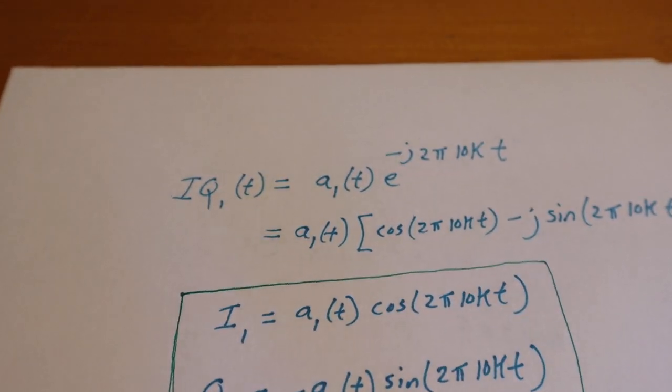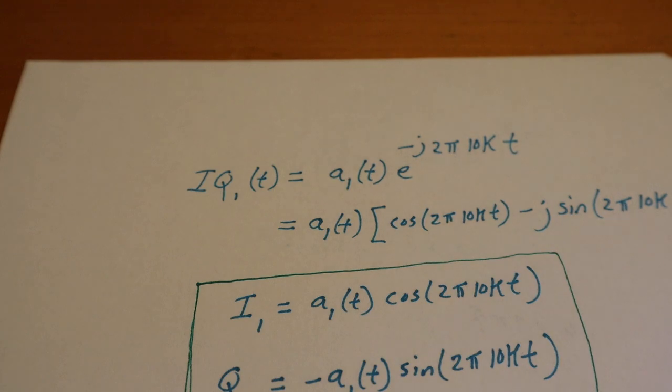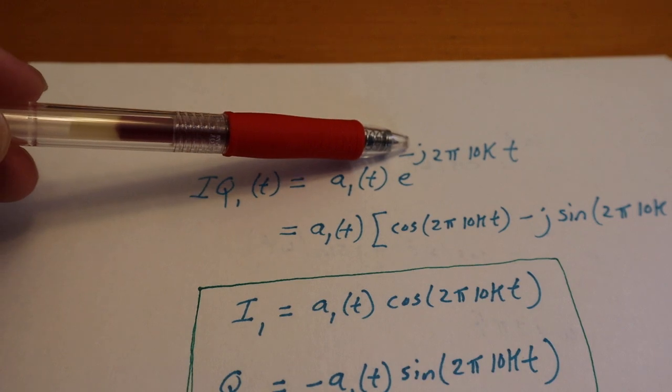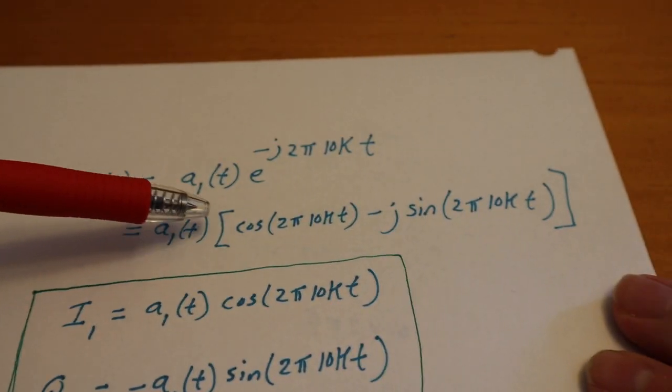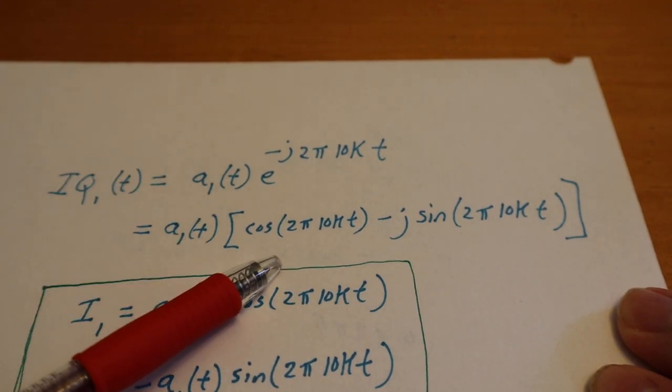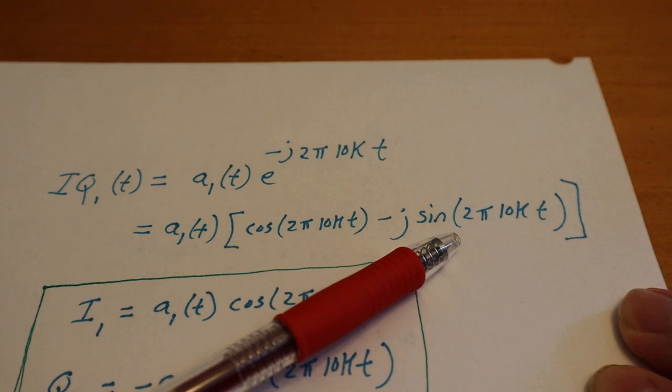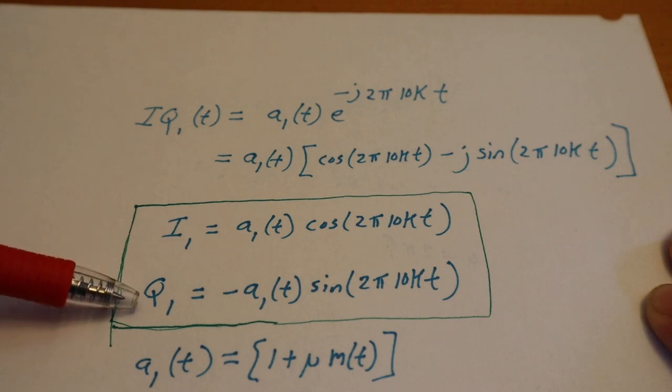We'll expand a little bit more on one of these terms just to show you guys what I'm talking about. So we'll look at one of the terms here: a1 multiplied by this e to the negative j 2π 10 kilohertz times time. And if we apply Euler's identity, we can break it out into the cosine function and the sine function.